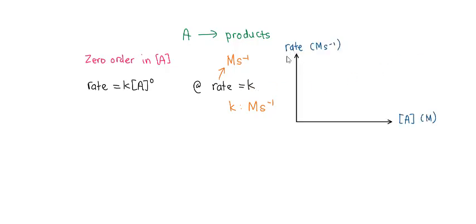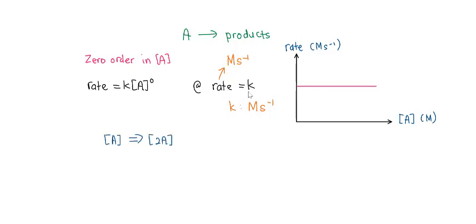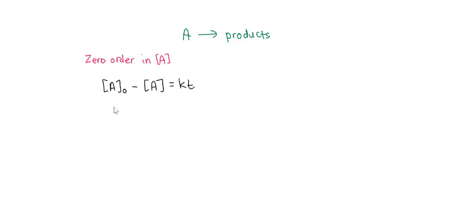To plot a graph of rate versus concentration of A: since rate equals K and K is constant, you will get a constant flat graph. What would happen if you double the concentration of A? Since the rate is independent of the concentration of A, we have a constant graph — if you double the concentration of A, the rate does not change.